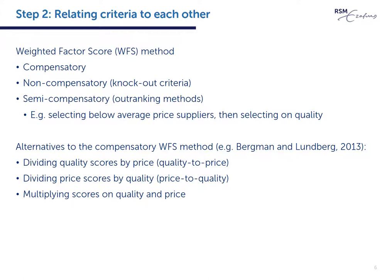In principle, one could also distinguish a third type of techniques within linear weighting models, and that is semi-compensatory or outranking methods. This is essentially a final selection process of two or more sub-steps, where in the first step, for instance, the suppliers with below average price are selected, and then in the second step, the suppliers are ranked in terms of their best score on quality or on a combined set of factors. In such a process, there is not a knockout criterion of a preset value, as in non-compensatory methods, and not all factored scores can be traded off with each other because of the stepwise scoring and exclusion of ineligible suppliers.